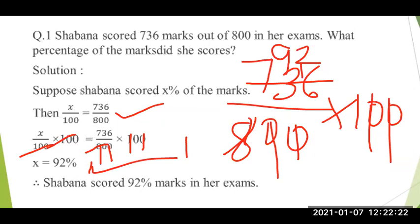The final answer — the question is a statement sum, so you have to write a statement. The statement is: Shabana scored 92 percent marks in her exam.